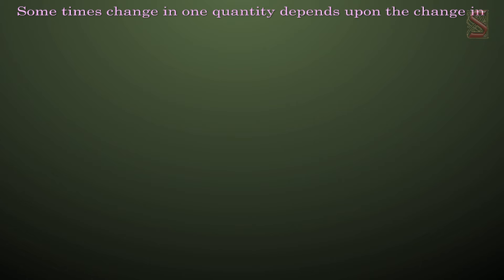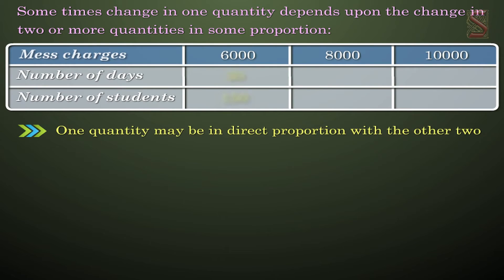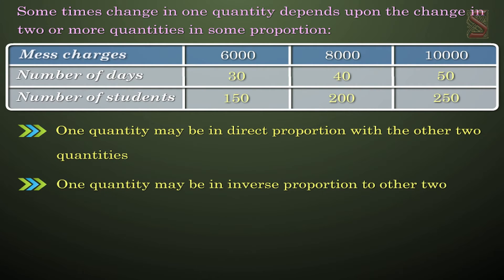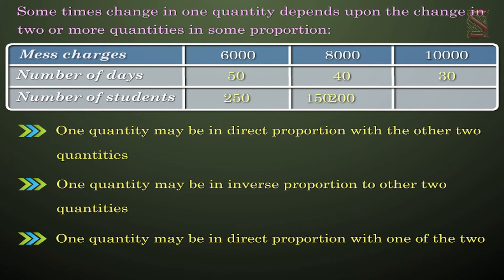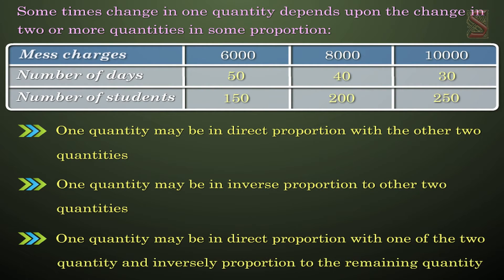Sometimes, change in one quantity depends upon the change in two or more quantities in some proportion. One quantity may be in direct proportion with the other two quantities. One quantity may be in inverse proportion to other two quantities. One quantity may be in direct proportion with one of the two quantities and inversely proportional to the remaining quantity.